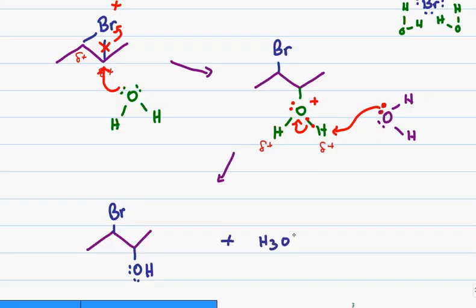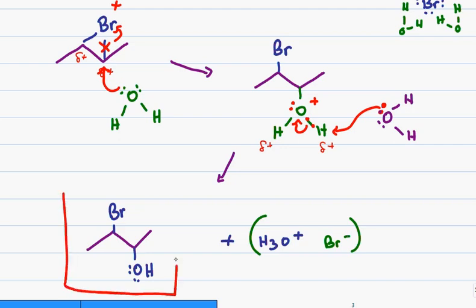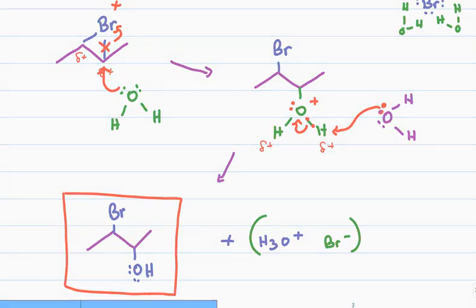I also have H3O+ forming in solution, which can balance the Br−, but again these are not things you have to show, because ultimately in the reaction you're looking for how the halohydrin formed.